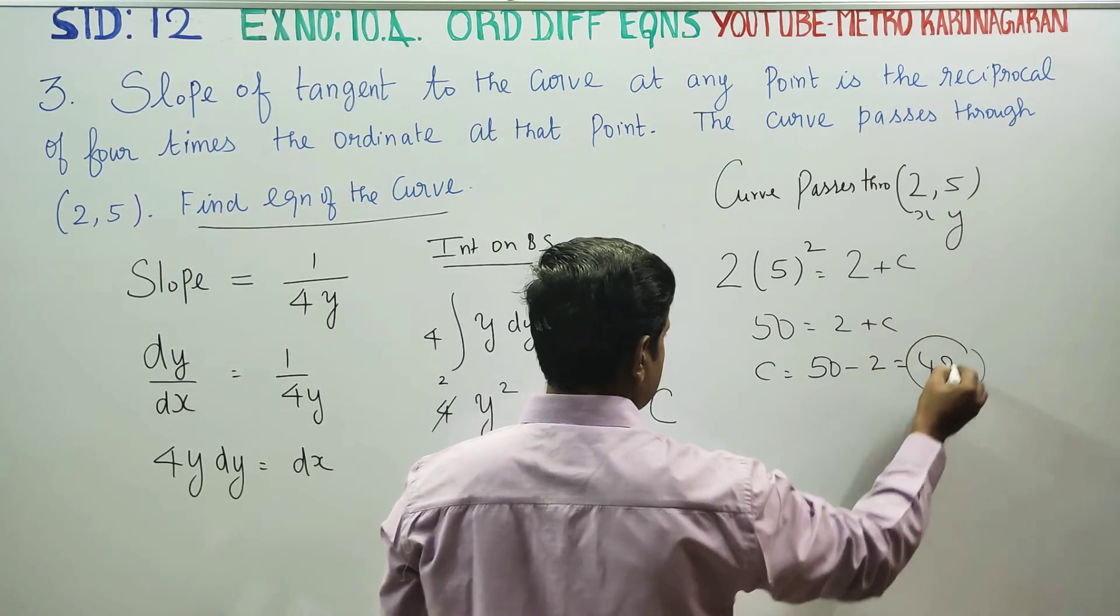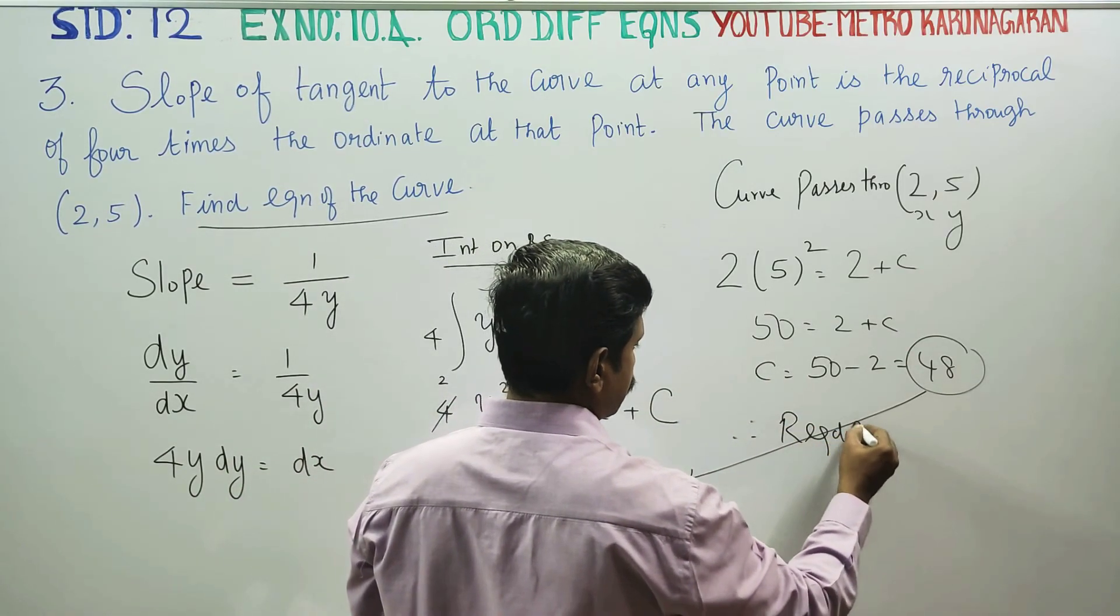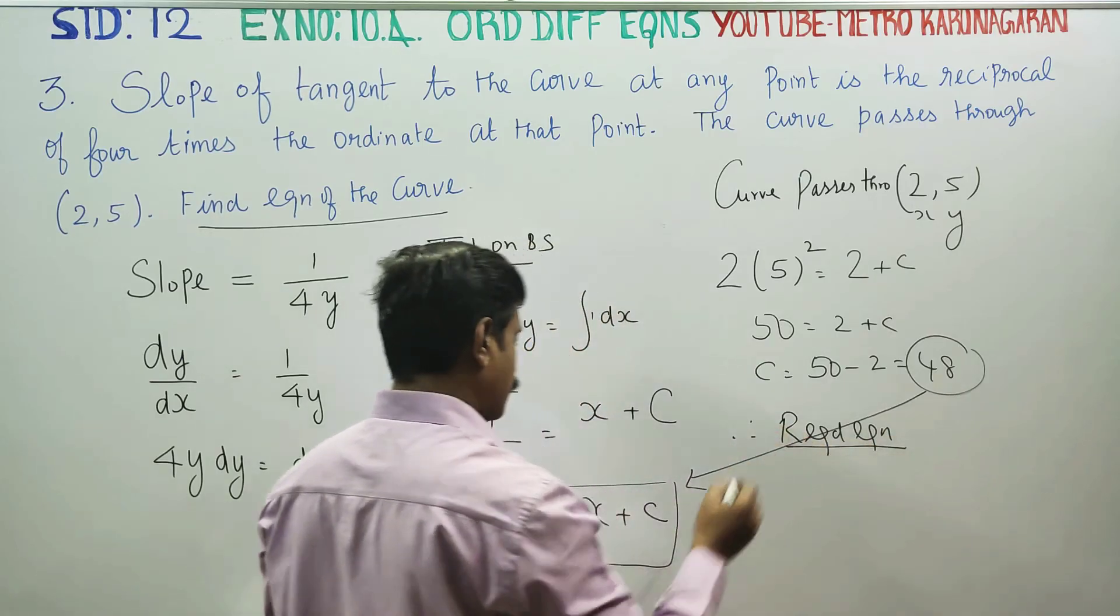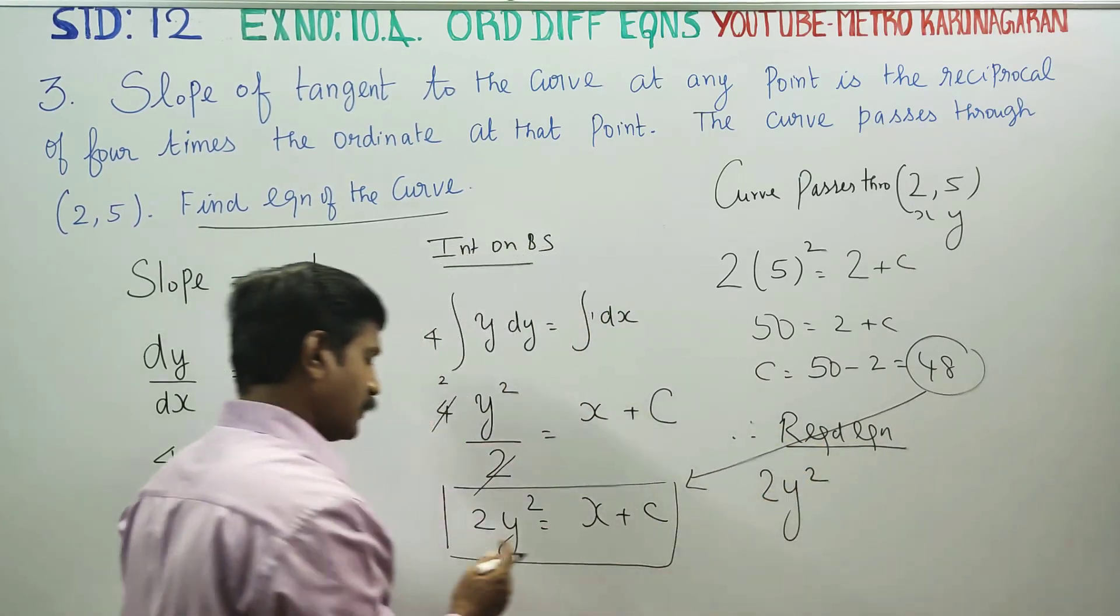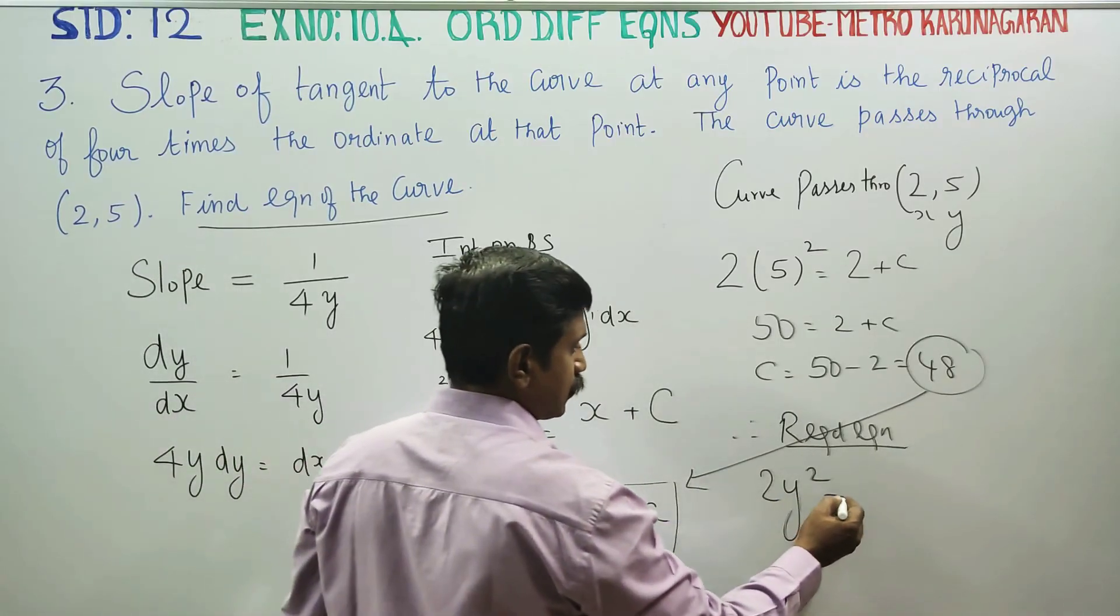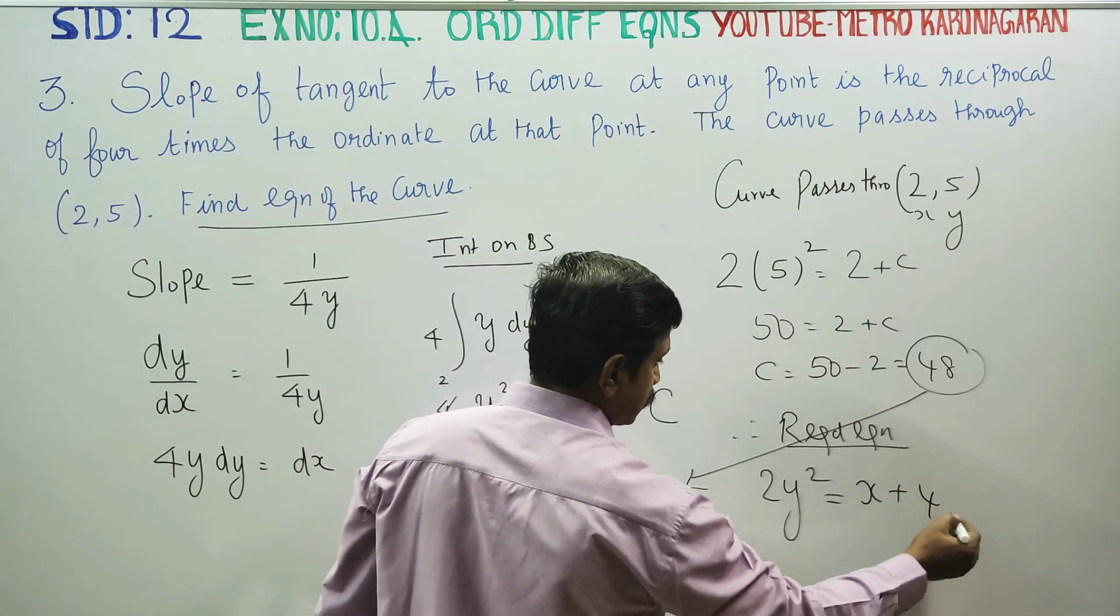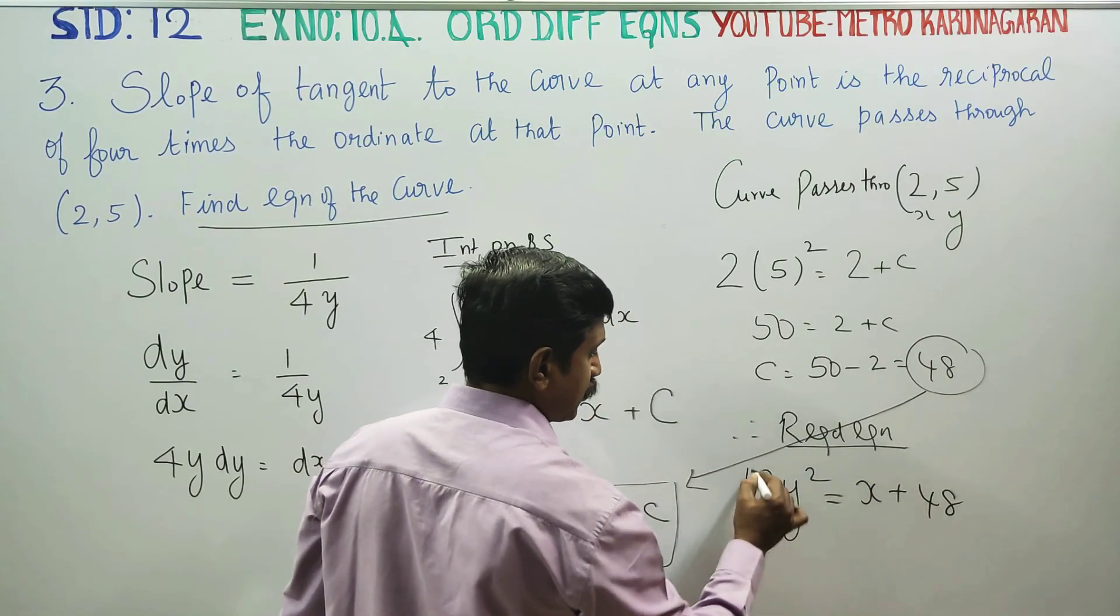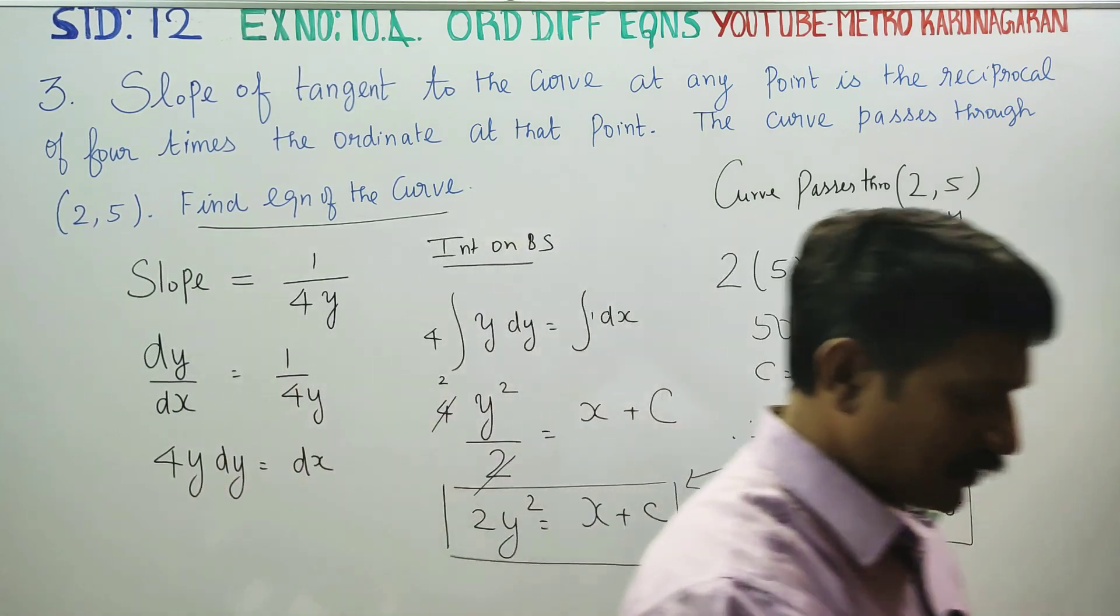This is your c answer. Now substitute this. Therefore, required equation will be 2y square is equal to x and c is 48. This is your required result. This is your final answer.